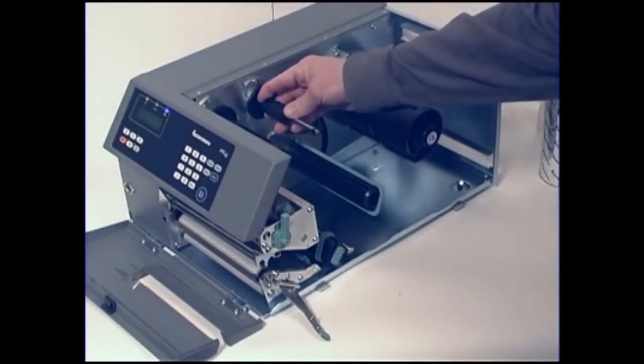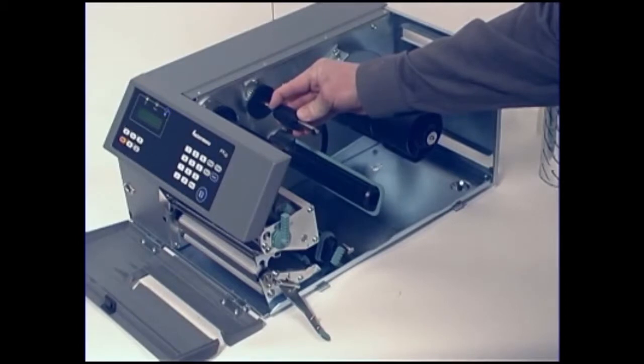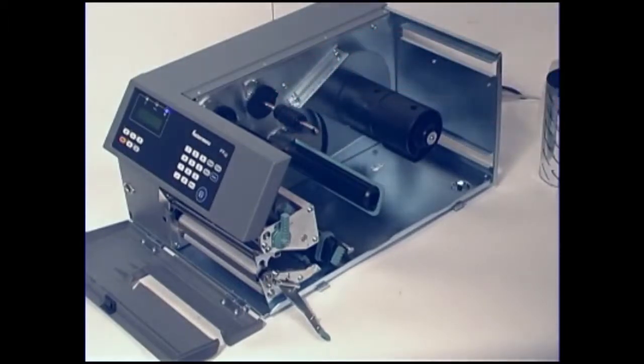Adjust the ribbon supply bobbin for the size of ribbon you are using. If your ribbon is 55 to 60 mm, 2.16 to 2.3 inches wide, compress the ribbon supply bobbin and move it so it snaps into the first, innermost groove.